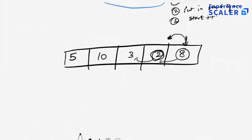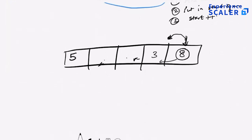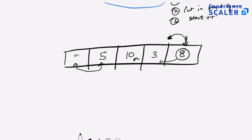Then I say 2, look at the next person ahead of you. If you're smaller than that, then swap. I see that 2 is smaller than 3, so I swap — 3 comes here, 2 comes here. Then I say 2, swap yourself against the next person if that person is bigger — 2 is smaller than 10, so it gets swapped: 2 comes here, 10 comes here. Again, compare 2 against 5 — 5 comes here, 2 comes here. So in this one O(n) loop, the smallest number has bubbled itself to the top of the array. This is why it is called bubble sort.